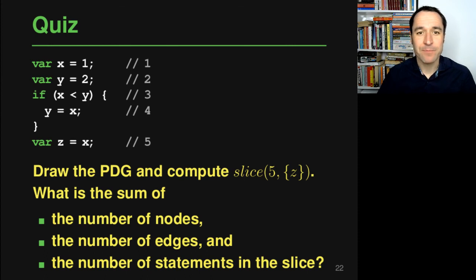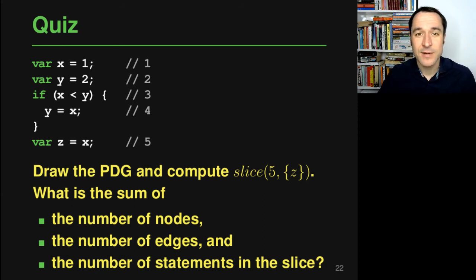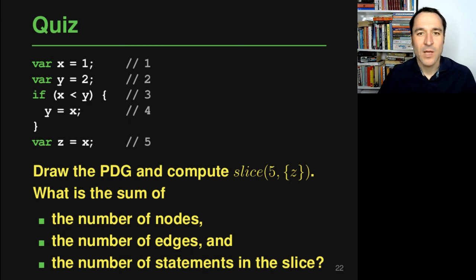To check your understanding, there's a second small program on the slide. Your task is to compute the data and control dependencies, draw the program dependency graph, and compute the slice of statement 5 for variable z. You can post your solution in Ilias, giving the sum of the number of nodes, edges, and statements in the slice as a checksum. This is the end of the second video in this lecture on slicing — you now know about Weiser's static slicing algorithm using graph reachability.